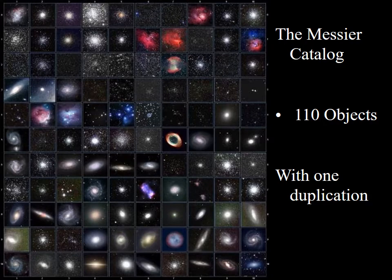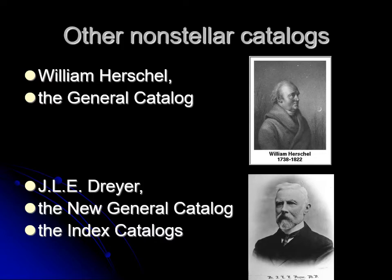Later, William Herschel came along and made what he called the General Catalog of Non-Stellar Objects. The General Catalog contained over a thousand objects — things that are not stars, including star clusters, clouds of gas called nebulae, and other clouds that we now recognize as galaxies, though Herschel didn't know what a galaxy was at the time.